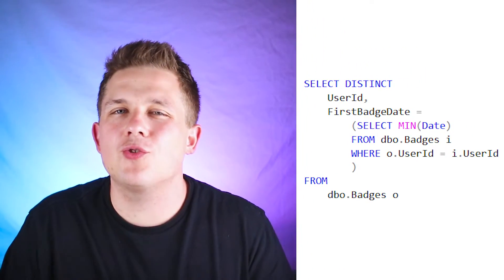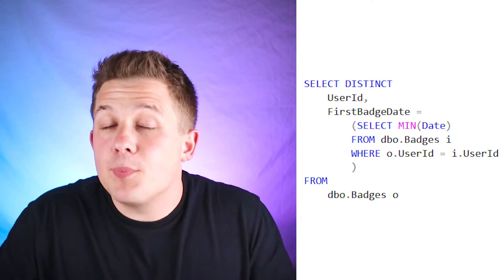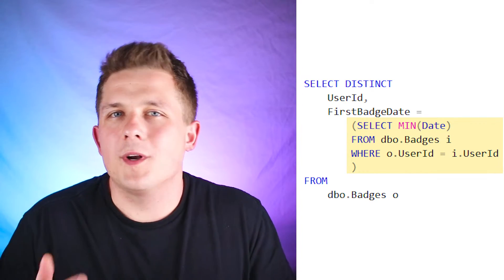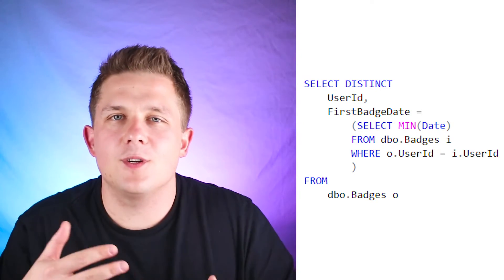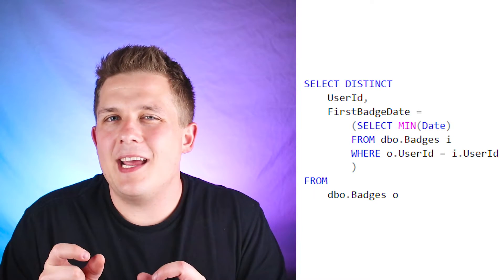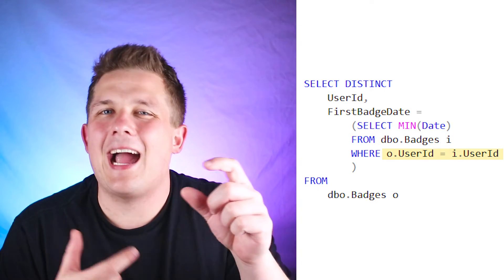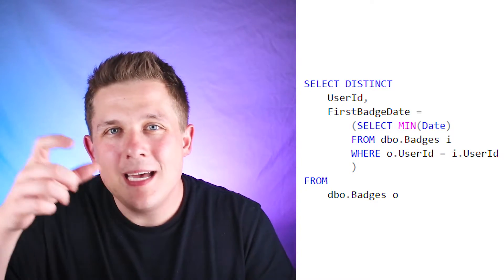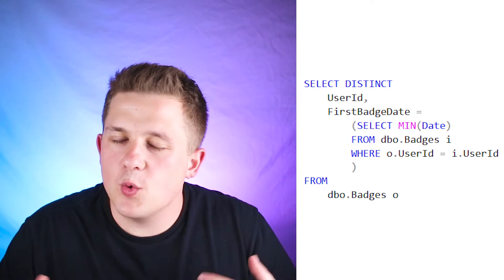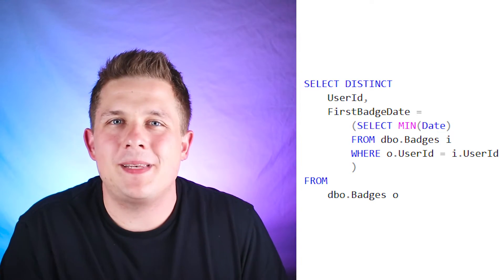We have this badges table and we're trying to identify the first date that every user received a badge. We're using a correlated subquery to figure that out. A correlated subquery is a subquery nested in some part of your regular SQL query, but there's some kind of join where the information within that subquery is being related to the columns of data outside of it. In this specific example, we're correlating the user ID from within our subquery to the badges table outside of it. For every user ID in our badges table, we execute this correlated subquery to retrieve the minimum date for that user ID.